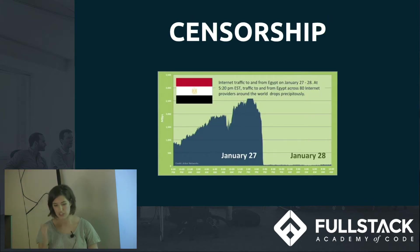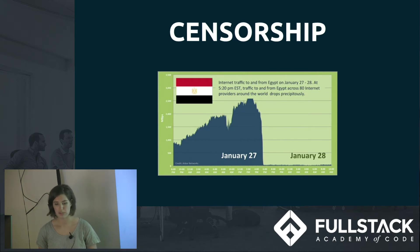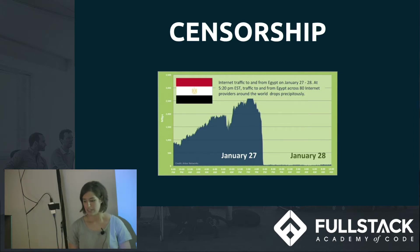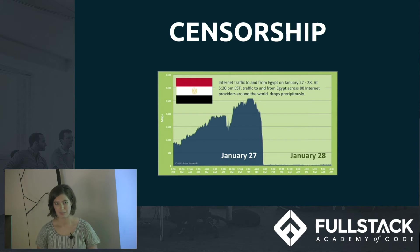Another issue is censorship. If our ability to communicate over the internet depends on centralized servers, it's very easy for the people who own those servers and the infrastructure to use that ownership to control our internet usage. An example is Egypt during the Arab Spring — the government was able to totally shut down the internet because they controlled the cables going in and out of the country. Overnight, everyone lost the ability to access the internet and organize against the government. This centralized system is pretty much a great weapon for oppression.